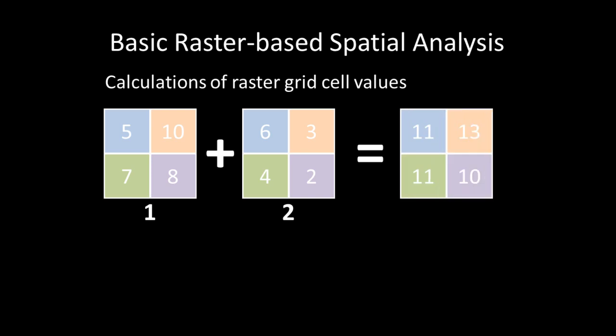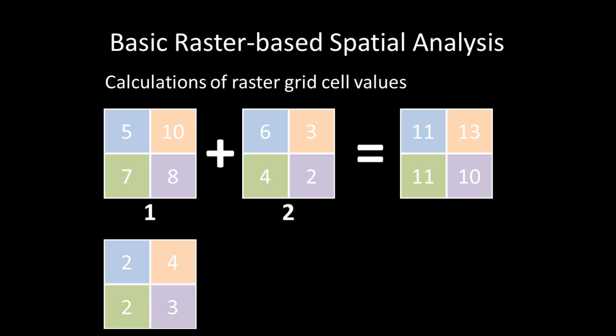Another example of map algebra is multiplying raster cells by a constant value. Many digital elevation models, or DEMs, contain topographic cell values that are in metric. Given that there are 3.28 feet to a meter, each cell value can be multiplied by a constant value of 3.28 to create a new output raster that contains cell values based on the multiplication of the input raster by the constant, creating a new raster grid with feet-based cell values instead of metric values.